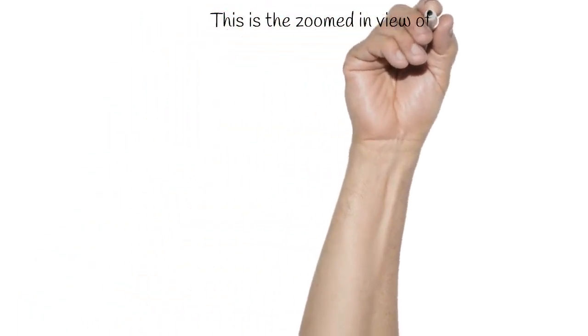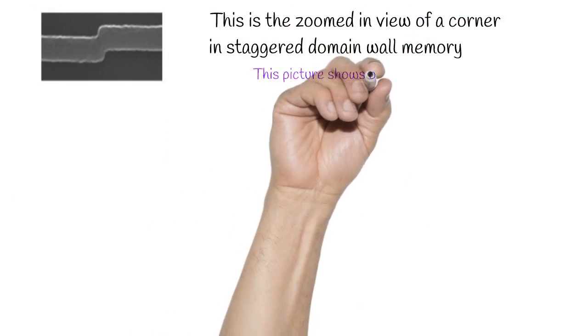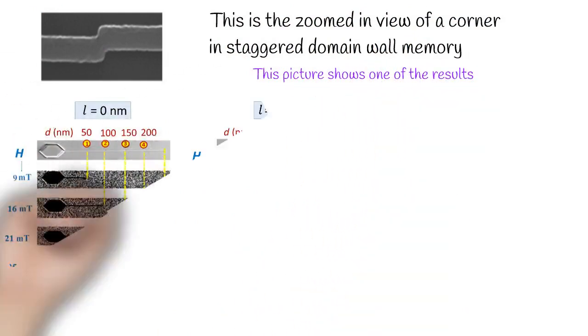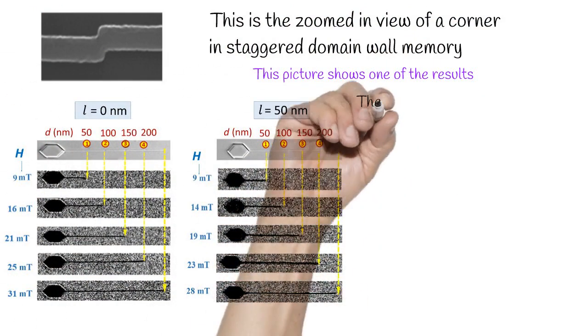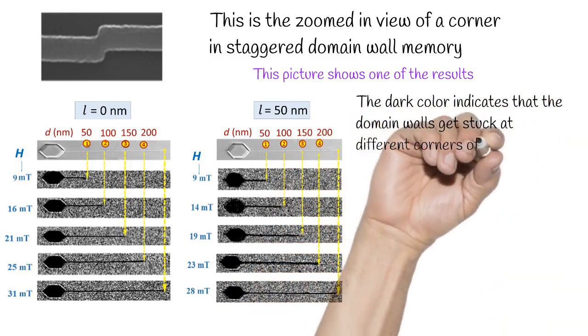This is the zoom-in view of a corner in a staggered domain wall memory. This picture shows one of the results. The dark color indicates that the domain wall gets stuck at different corners of a staggered domain wall memory.